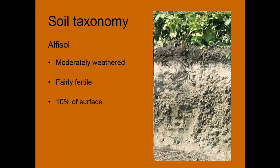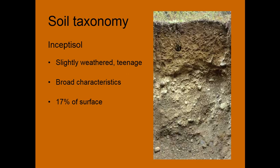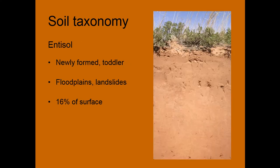Alfisols are moderately weathered and fairly fertile — a lot of our farmland — and cover about 10% of the soil surface. Then we have Inceptisols, which are slightly weathered, so they don't quite have as clear horizon definition, usually fewer horizons and broad characteristics — sort of our teenage soils, geologically speaking. And then our Entisols: these are like our baby or toddler soils, newly formed with very few horizons if any, often as a result of floodplains or landslides — recently deposited, and the soil-forming factors haven't had very much time to act on them.